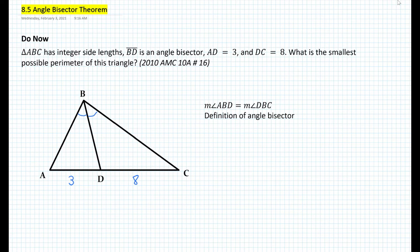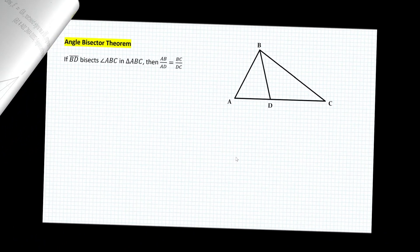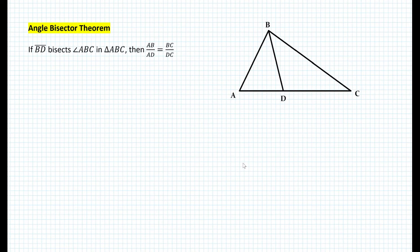So how do we find the perimeter here? At this point, if you want to, you can pause the video and try this out. In order to solve this problem, there is a theorem that we need — it's called the angle bisector theorem. If segment BD bisects angle ABC in triangle ABC, then AB over AD must be equal to BC over DC, and this proportion must always be true.